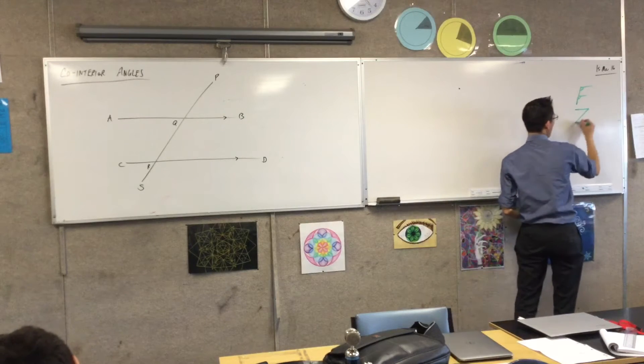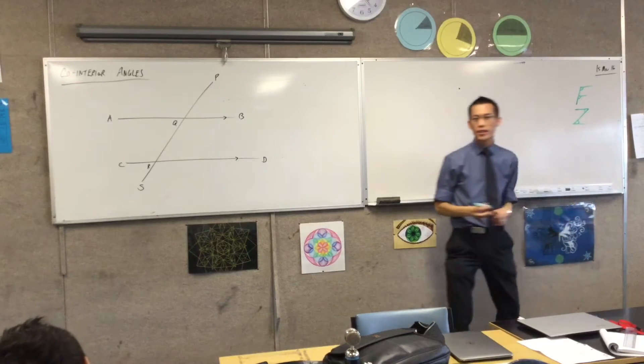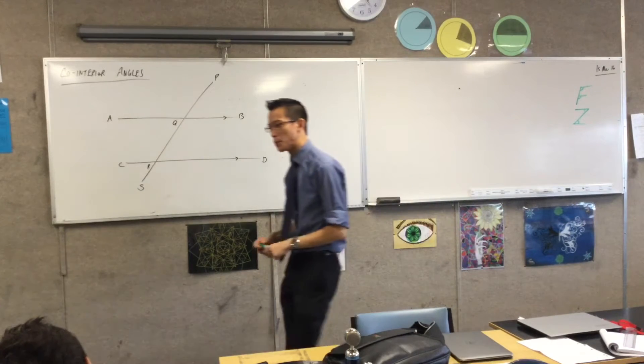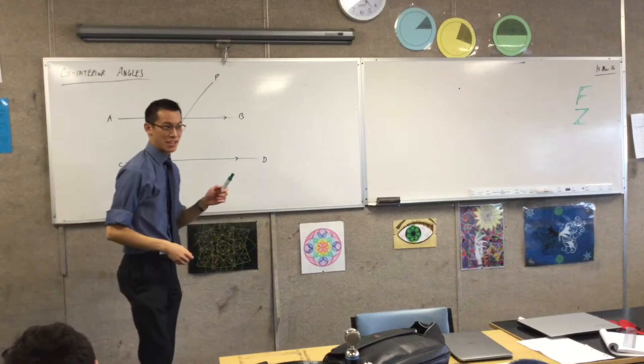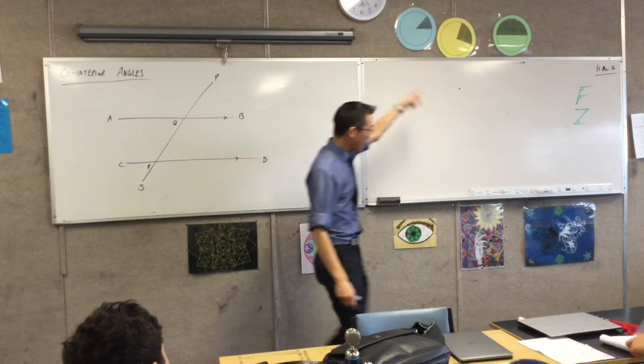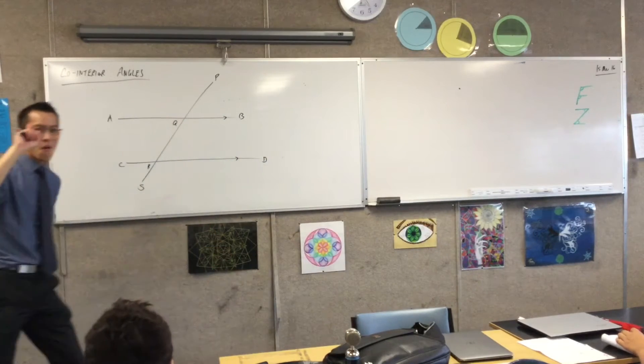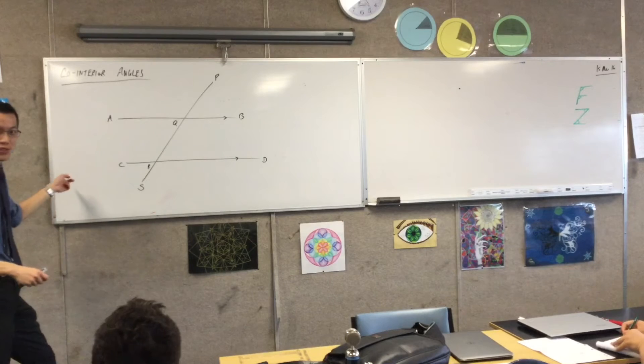If you've got alternate angles, they kind of look like this shape. At least that's one of the forms they can take. So some people would like to call them, can you guess, zangles. We've got fangles, we've got zangles, we've got one last one that I'm going to show you this lesson.